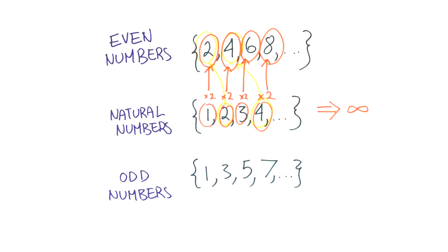However, since every whole number multiplied by 2 corresponds with an even number, the set of even numbers is also infinitely large. The same can be said for the set of odd numbers.